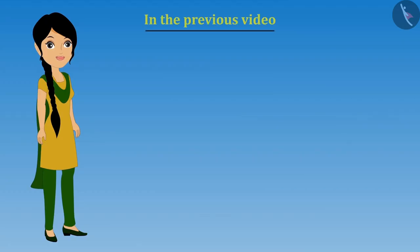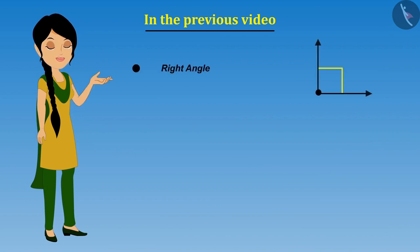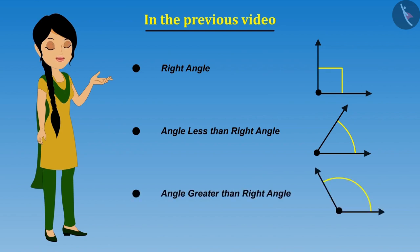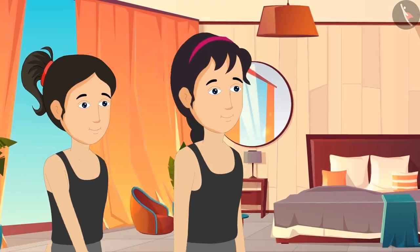Hello friends. In the previous video, we learned what a right angle is, what an angle less than a right angle is, and what an angle greater than a right angle is, along with Riva and Meena. In this video, we will identify all these angles formed in different objects along with Meena and Riva.